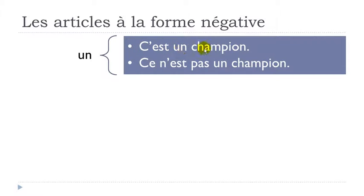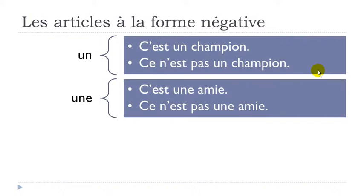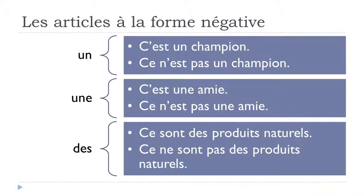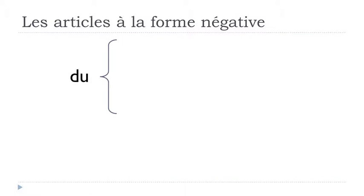With 'c'est': c'est un champion — this is a champion. In the negative form: ce n'est pas un champion. The article stays the same — it doesn't change! Feminine: c'est une amie. Negative: ce n'est pas une amie. 'Une' stays. Plural: ce sont des produits naturels. Negative: ce ne sont pas des produits naturels.